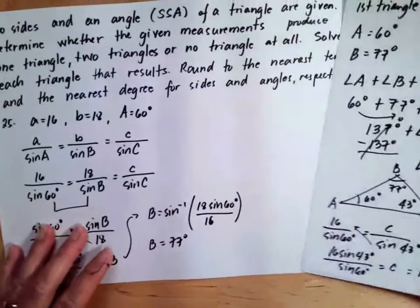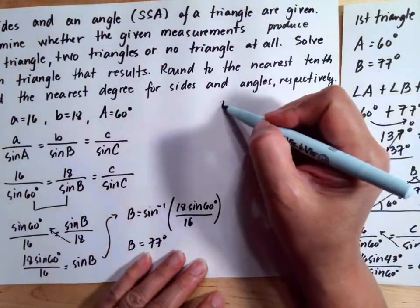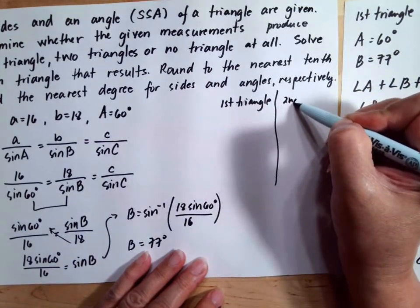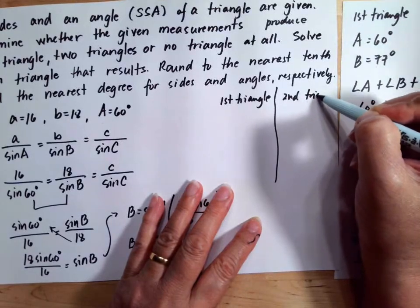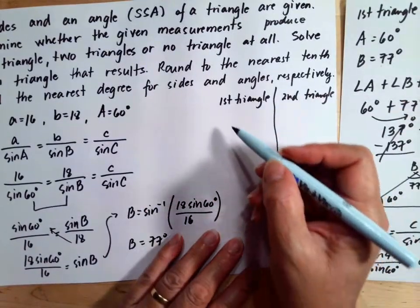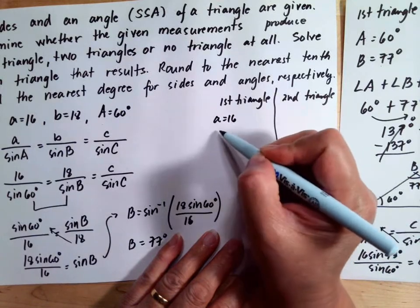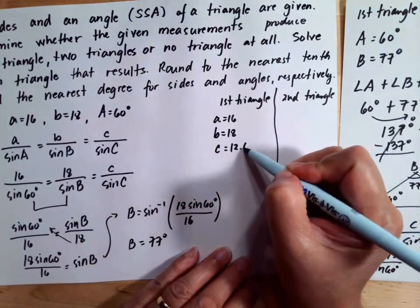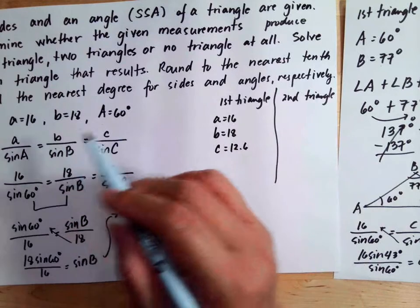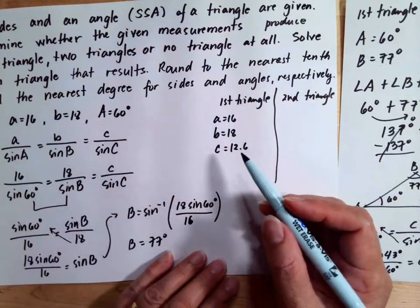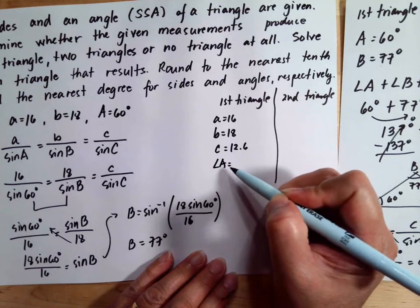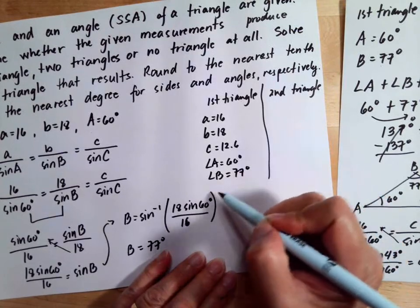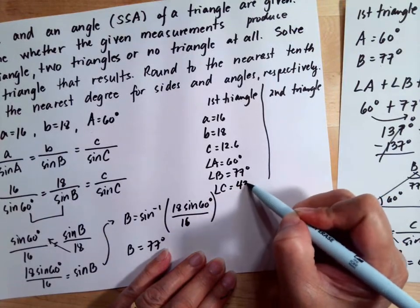So our answers are: for the first triangle, side a is 16, side b is 18, and side c is 12.6; angle A is 60 degrees, angle B is 77 degrees, and angle C is 43 degrees. For the second triangle, side a is 16, side b is 18, side c is 5.4, angle A is 60 degrees, angle B is 103 degrees, and angle C is 17 degrees.